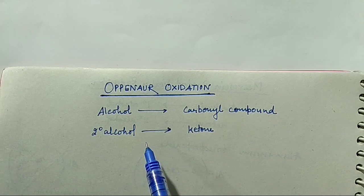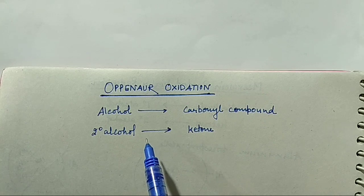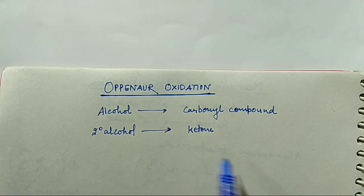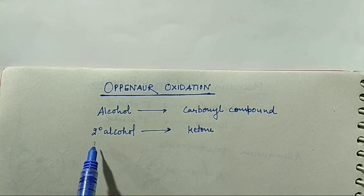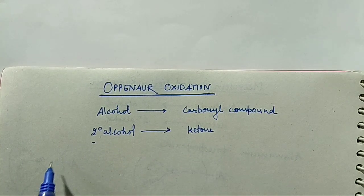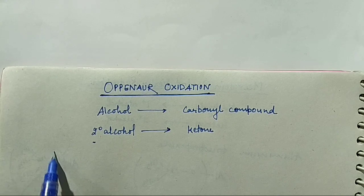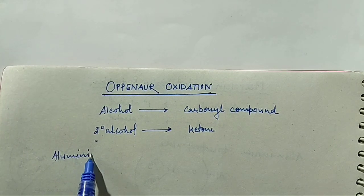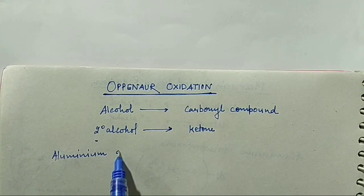We can also convert primary alcohol into aldehyde with this reaction, but for that we have to use a better hydride acceptor. So what reagent is required for the conversion of alcohol into ketone? The reagent required is Aluminium Alkoxide.